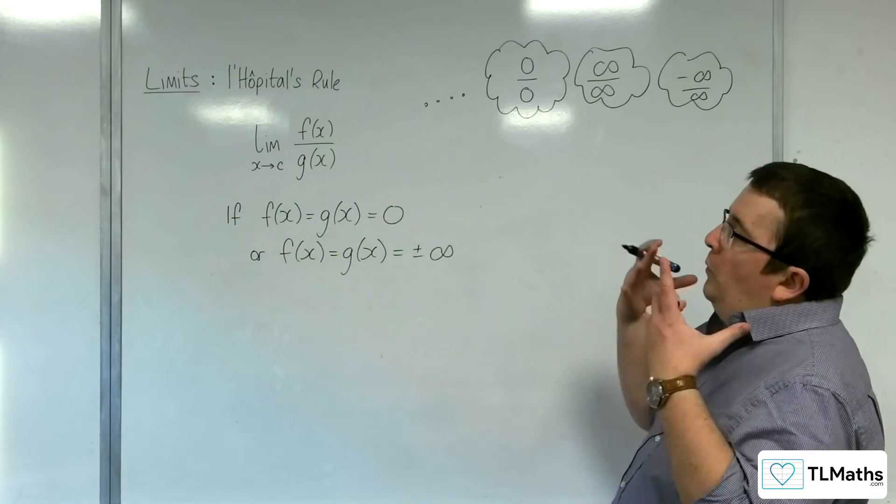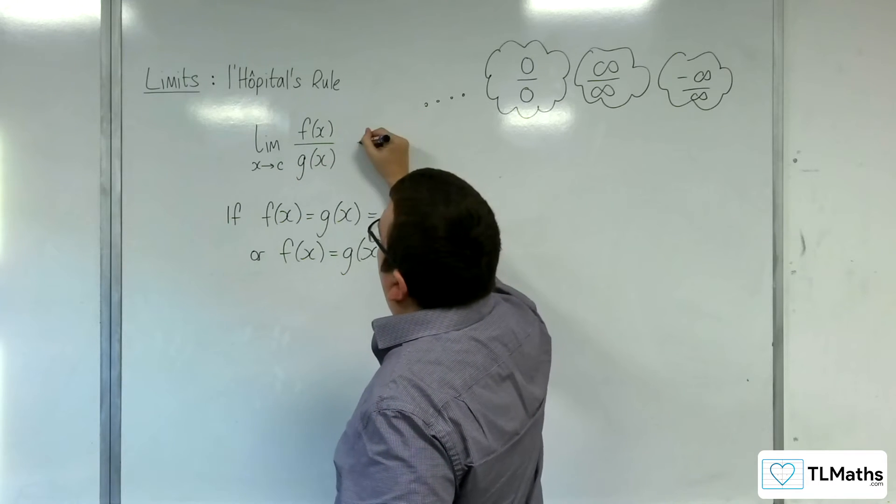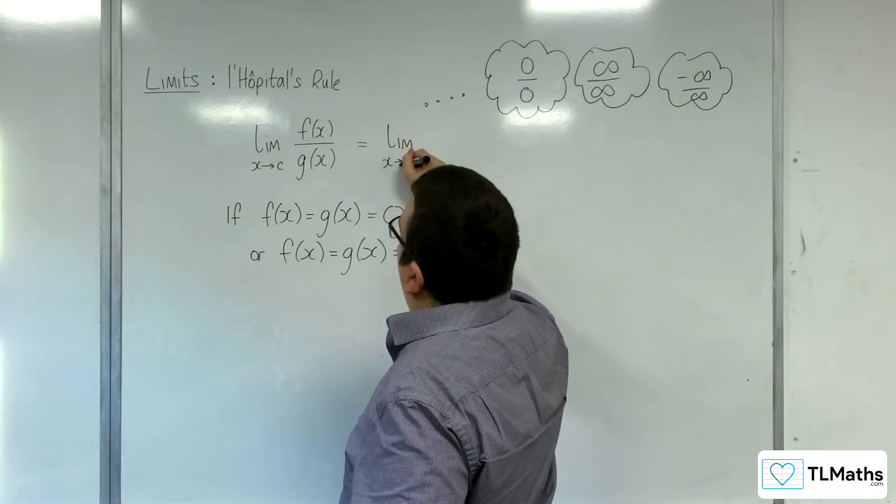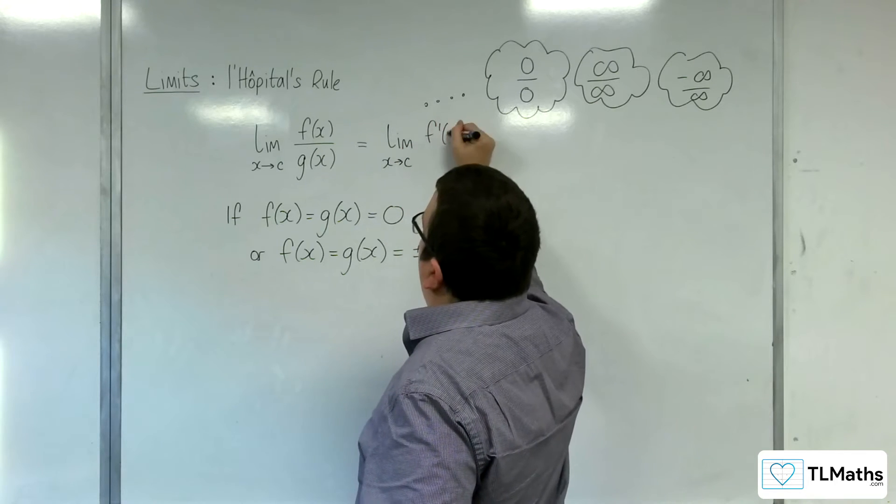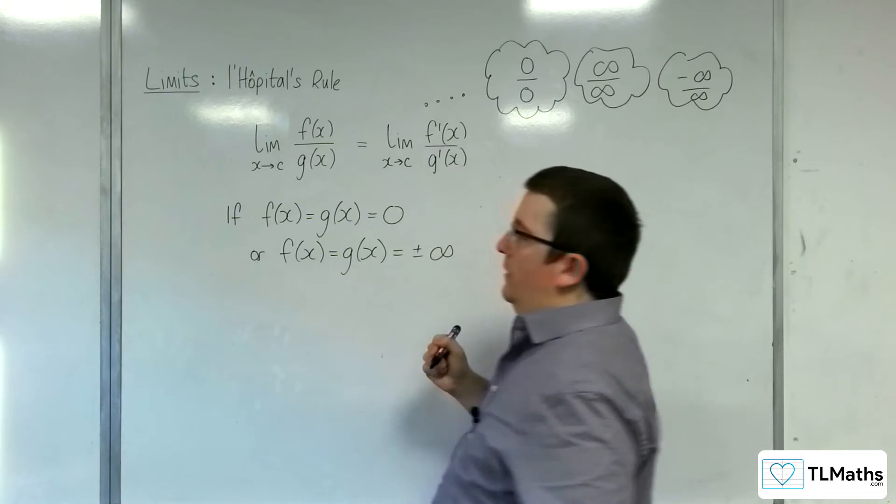Then, what we can say is that the limit as x tends to c of f of x over g of x is actually the same as the limit as x tends to c of f prime of x over g prime of x.